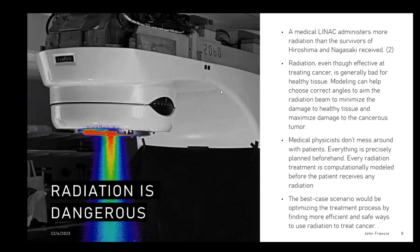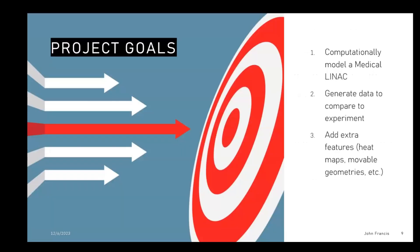The best case scenario I thought of is creating a computational model with some kind of AI to test many different rotations of the medical LINAC, finding the optimal angles to minimize radiation on healthy tissue and maximize it on the cancerous tissue — that's kind of the long-term goal of my project. My goals for this project were: one, computationally model a medical LINAC; two, generate data to compare to experiment to verify accuracy; and three, add features like heat maps to visualize radiation and the ability to rotate the geometry, since a real medical LINAC rotates around the patient.